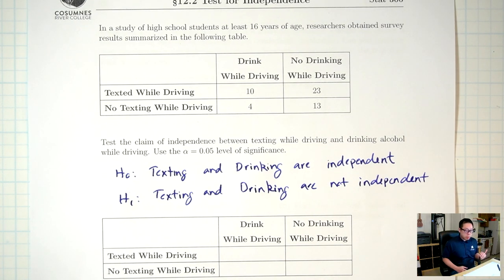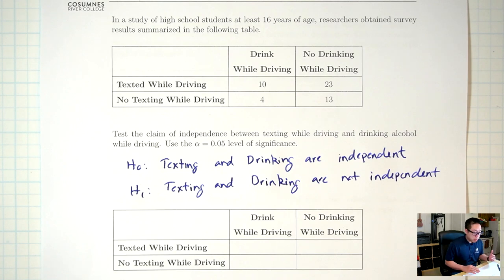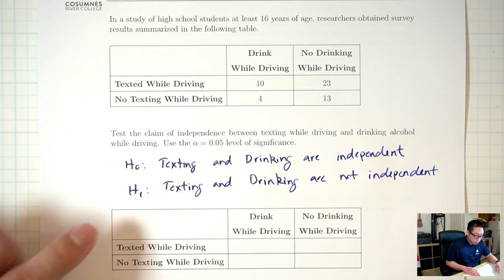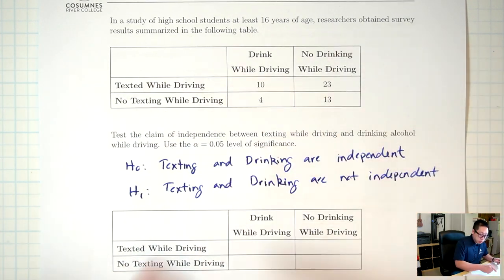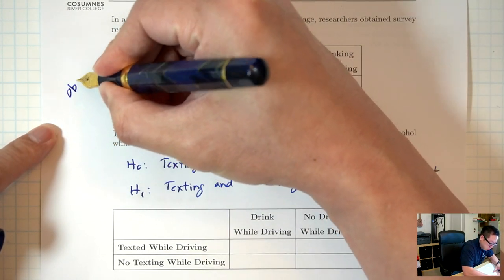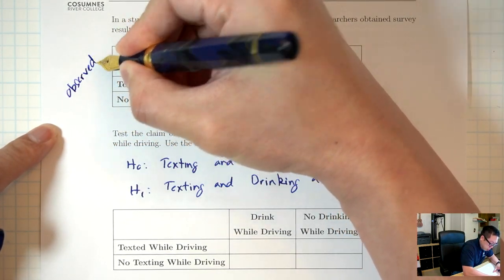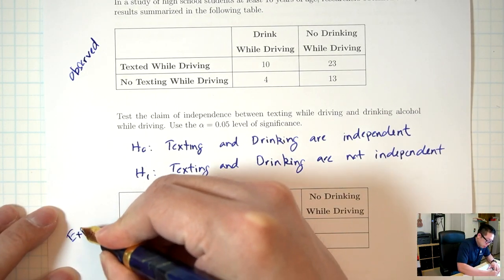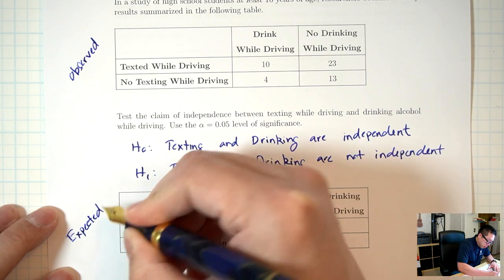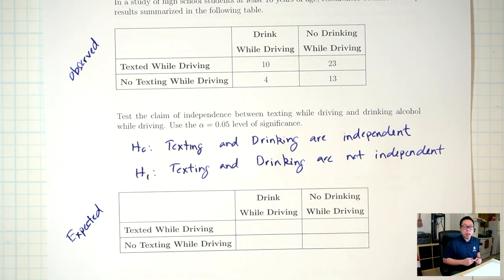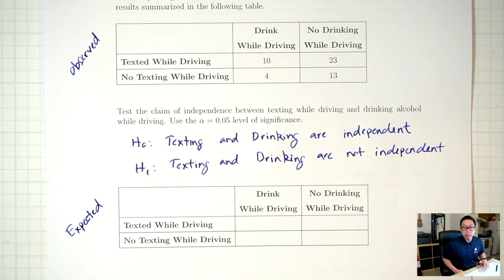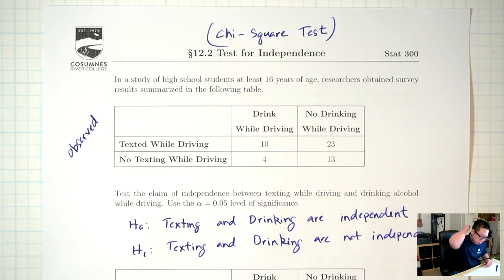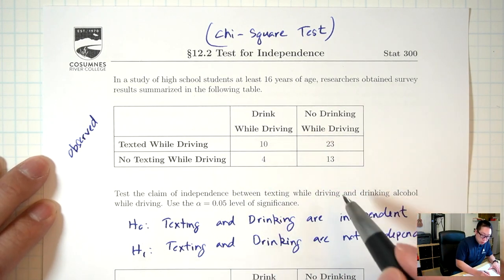And just like the goodness of fit test, we're going to be comparing observed counts with expected counts. The original table — these are my observed counts. And this new table is the expected counts. What's different is how you calculate the expected counts for a test for independence.